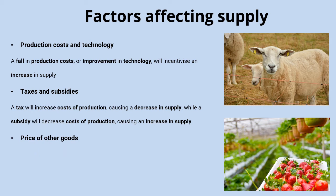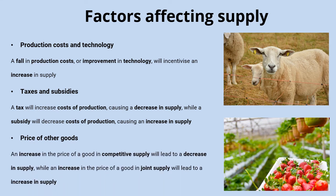Finally, the price of other goods can have an impact. If we have two goods in competitive supply — for example, strawberries and raspberries, which use the same growing space — and the price of strawberries goes up, those farmers will think they can get more profit from strawberries rather than raspberries. So an increase in the price of a good in competitive supply leads to a decrease in supply of the other good: suppliers produce more strawberries and fewer raspberries.